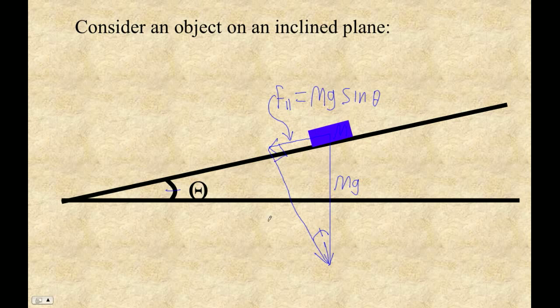This side here is the perpendicular component. That's going to be mg cos of the angle. So this is what we've got.